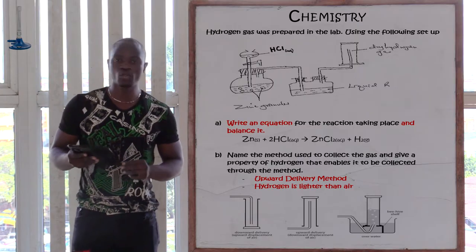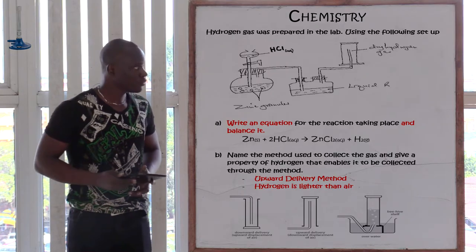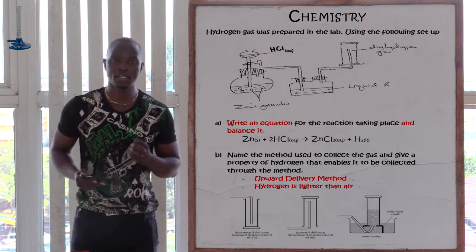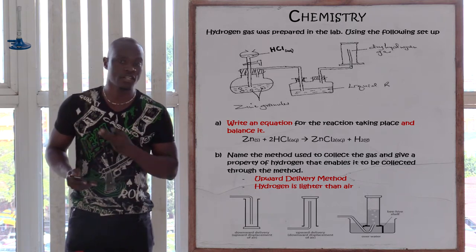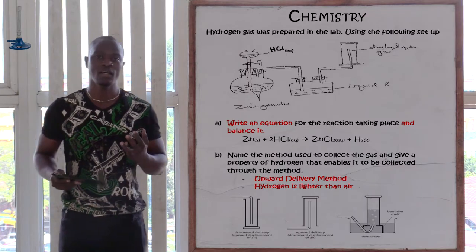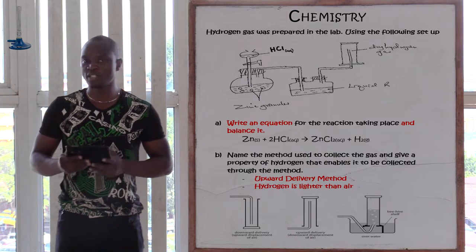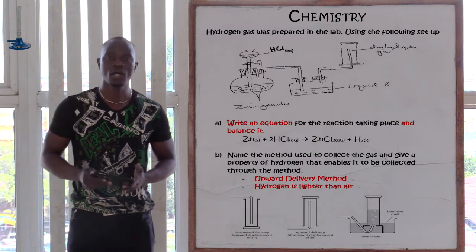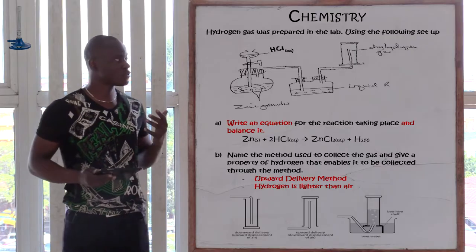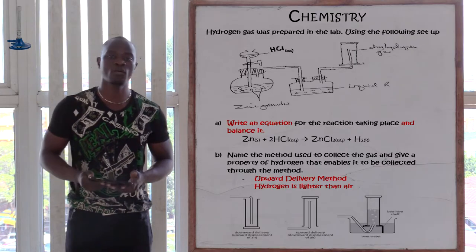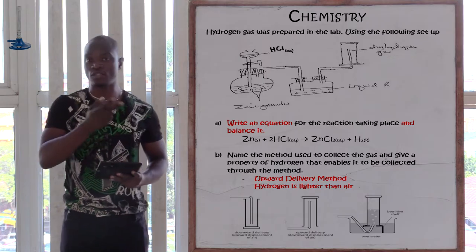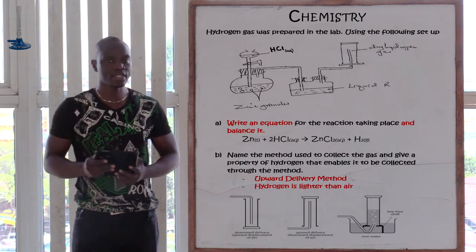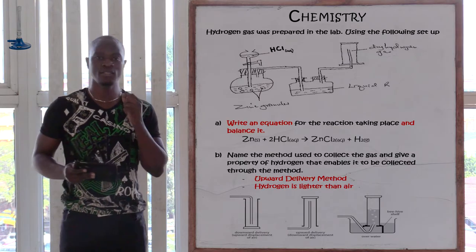To balance this equation is simple — you add two in front of hydrochloric acid. Then hydrogen on this side will be two, and hydrogen gas on the other side will also have two molecules. Chlorine on this side will have two, and on the other side in the salt zinc chloride, the valency of zinc is two and the valency of chlorine is one. Therefore, the salt zinc chloride is written as ZnCl2.